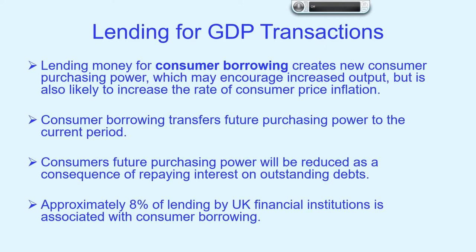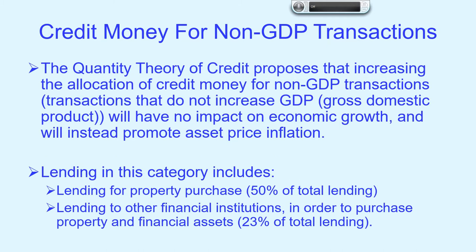Overall, total lending for GDP transactions is about 24% of total lending by UK financial institutions — 15.5% of lending to business for business investment and 8% of lending for consumer borrowing. The quantity theory of credit then considers the impact of financial institutions allocating credit money for non-GDP transactions.